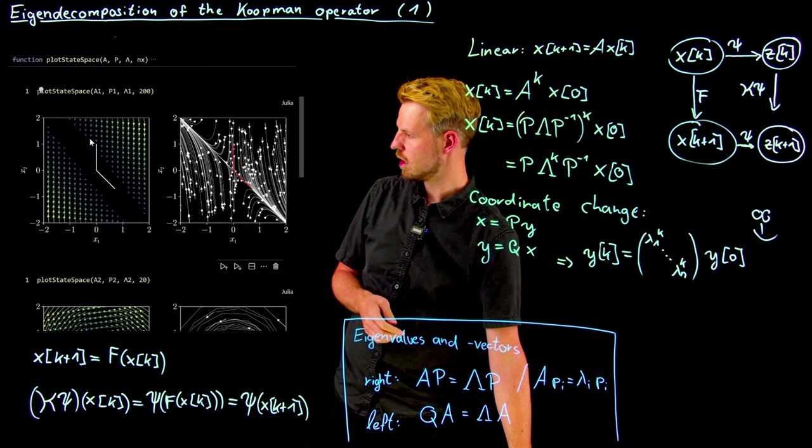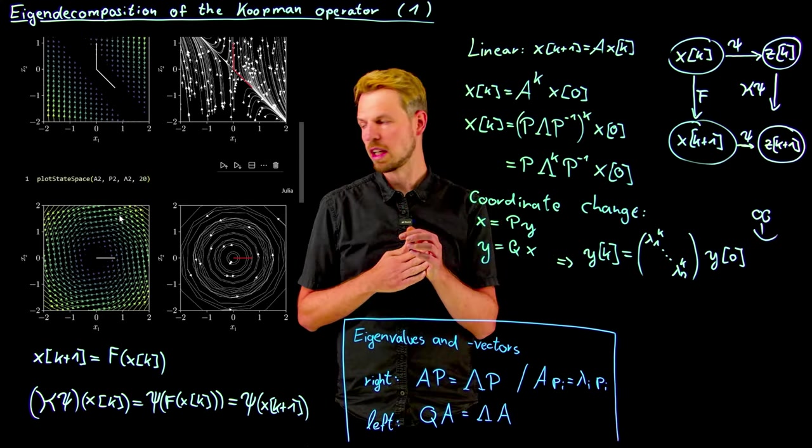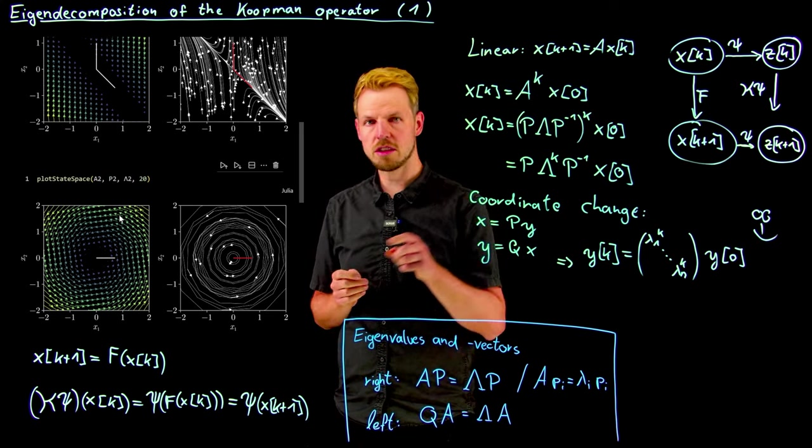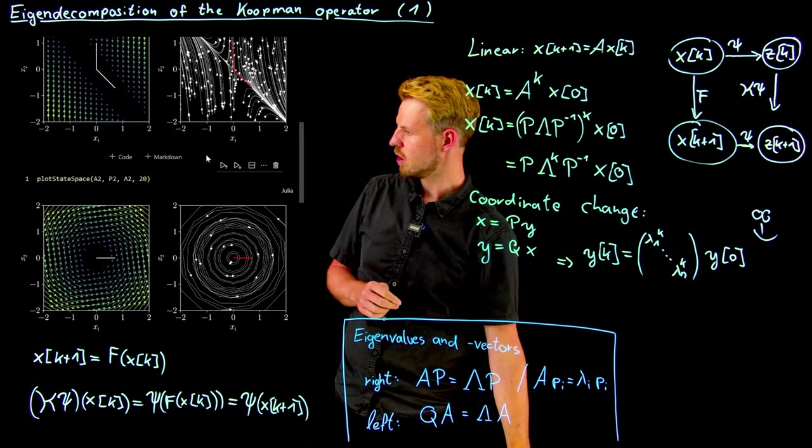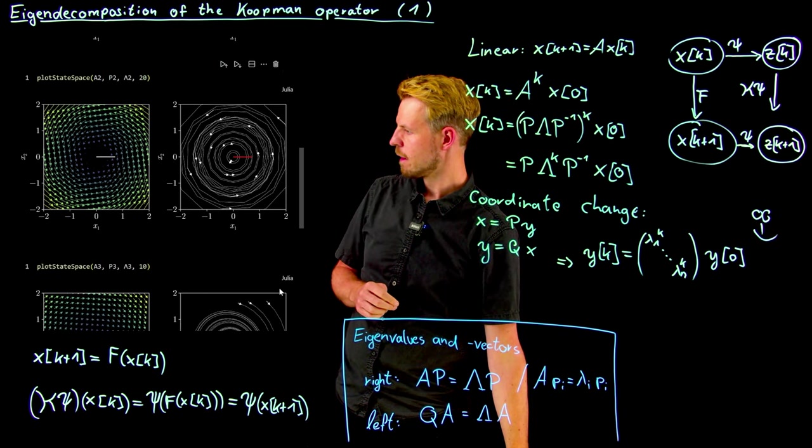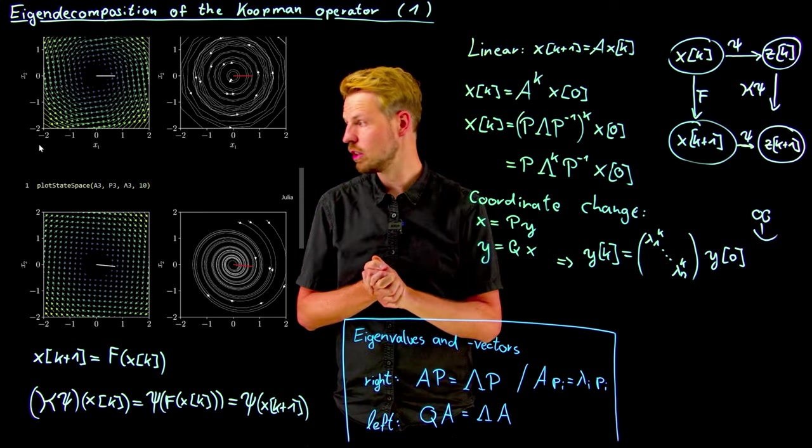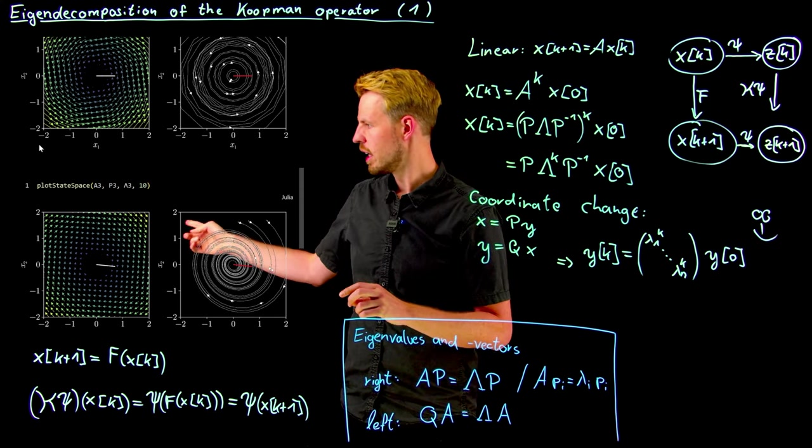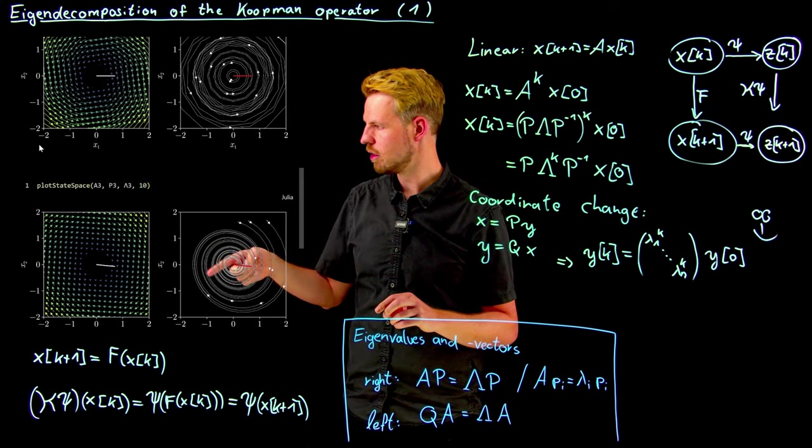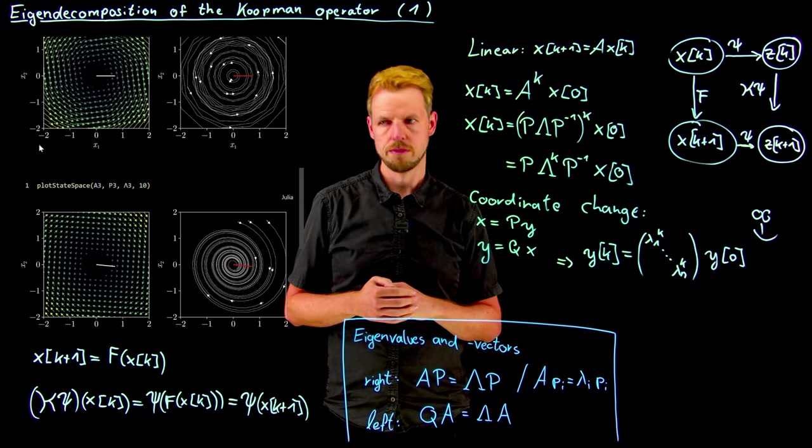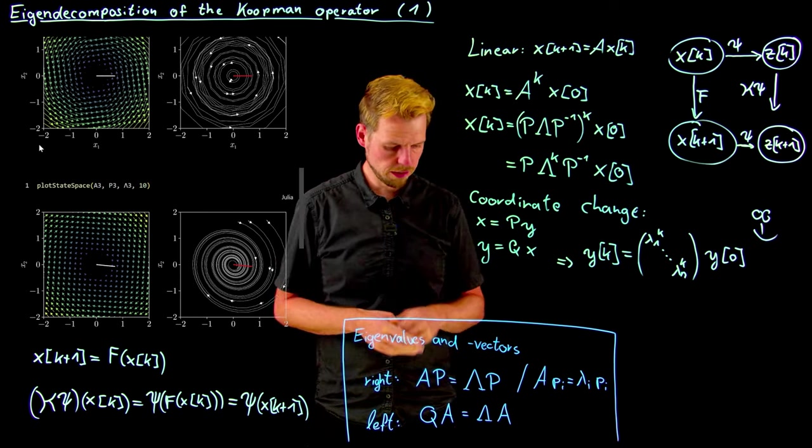So an eigendecomposition allows us to really study a system very systematically. And if we now consider the system that is stable, so we have just a pair of complex conjugate eigenvalues with absolute value 1, you see that the system simply goes in circles which you see in the vector field and also in these trajectories. And third case is where we have a stable system, meaning that the eigenvalues are smaller than 1 in absolute value. And we have a similarly looking vector field, but these trajectories now spiral into the origin. So this is what's very, very interesting and useful for linear systems.